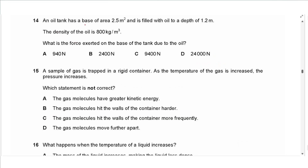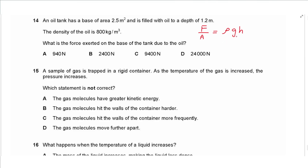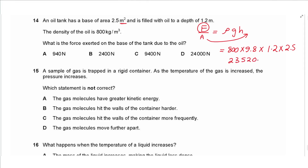Question 14: an oil tank has a base area of 2.5 m² filled with oil to a depth of 1.2 m. The density of oil is 800 kg/m³. Force = ρ × g × h × A = 800 × 9.8 × 1.2 × 2.5 = 23,520 N, approximately 24,000 N. The answer is D.